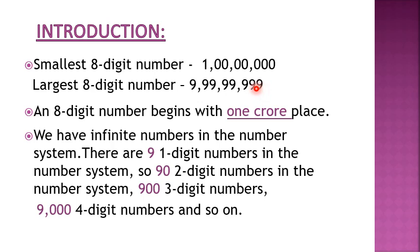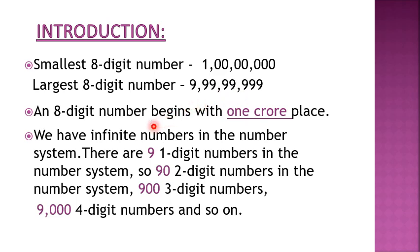So children, by now we are very much familiar with reading and writing the smallest and the largest numbers. An eight-digit number begins with the one crore place in the place value chart, which we will learn later. First, let us learn how many digit numbers there are in our number system.